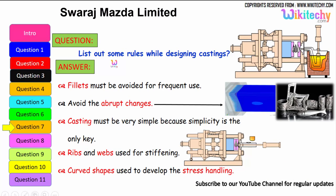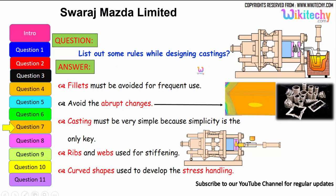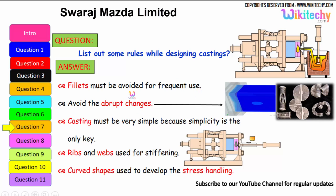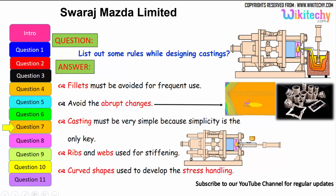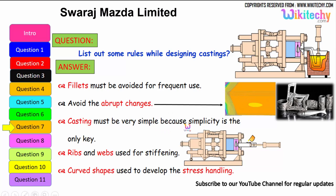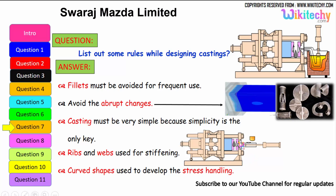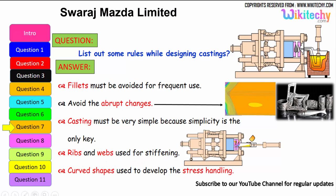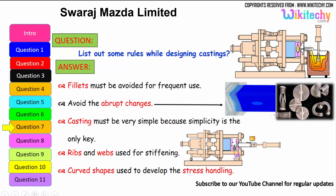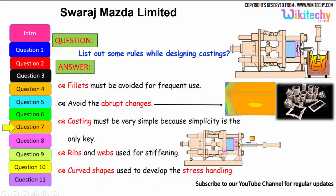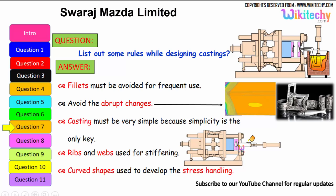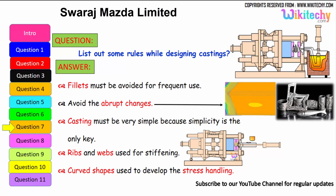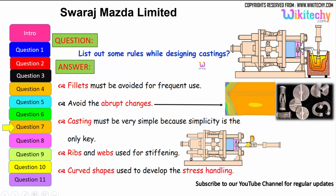Let us see some of the rules while designing castings. Fillets must be avoided for frequent use — that is the first rule. Avoid abrupt changes in section. Castings must be very simple, because simplicity is the key. Ribs and webs are used for stiffening. Curved shapes should be used to handle stress distribution effectively.